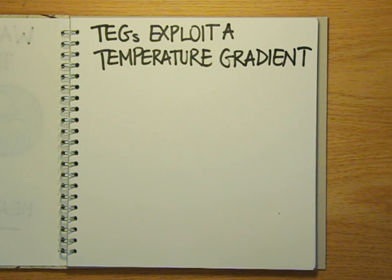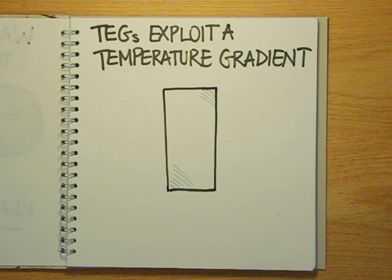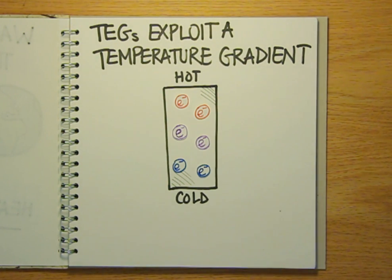Thermoelectric generators work by exploiting a temperature gradient between the two sides of the generator. Think of it like this. If you take a piece of metal, heat one end and simultaneously cool the other, the electrons surrounding the metal atoms at the hot end will have more energy than the equivalent electrons at the cooler end.